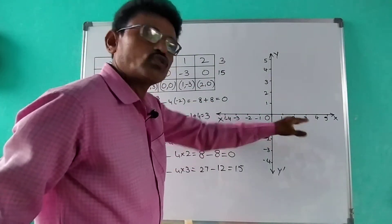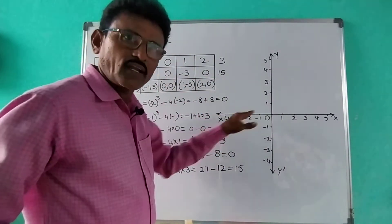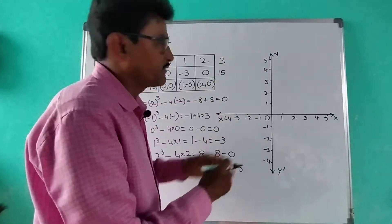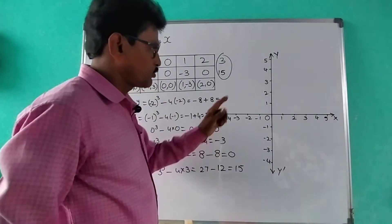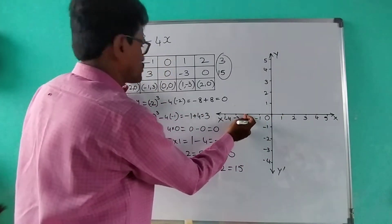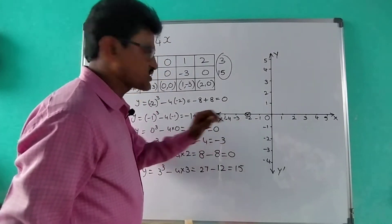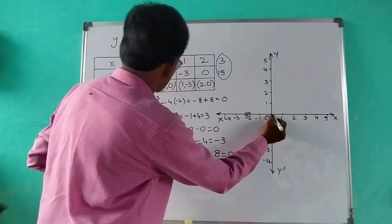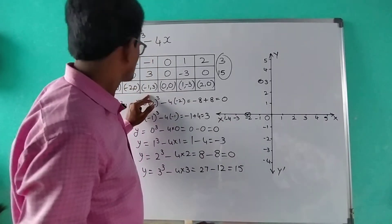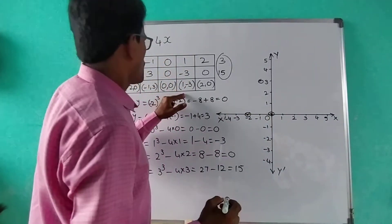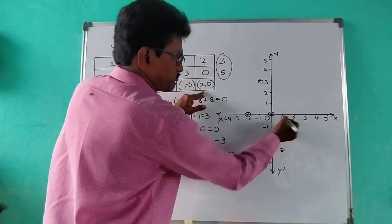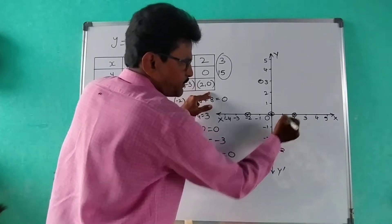On the x-axis I have taken scale 1, 2, 3, 4. But on the y-axis, since we are getting 15 for x = 3, I would need to take scale 2, 4, making it too lengthy — that's why I'm not taking that value. Now plotting: the first pair (-2, 0) is on the x-axis at -2. The pair (-1, 3) goes up to 3 on the y-axis. The pair (0, 0) is the origin. The pair (1, -3) goes down to -3. The pair (2, 0) is on the x-axis at 2.